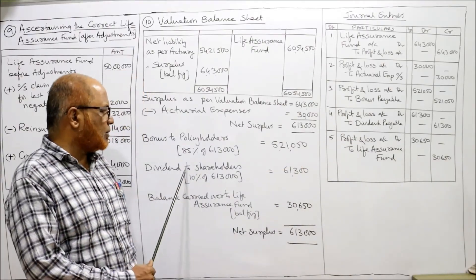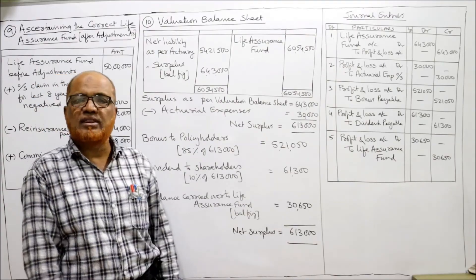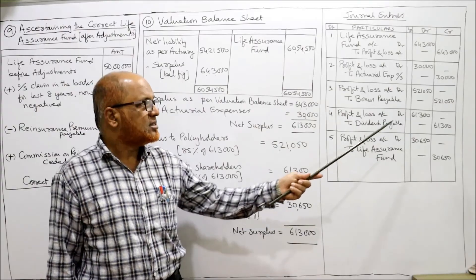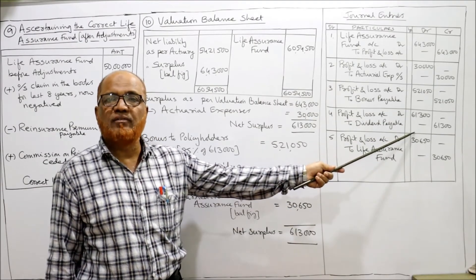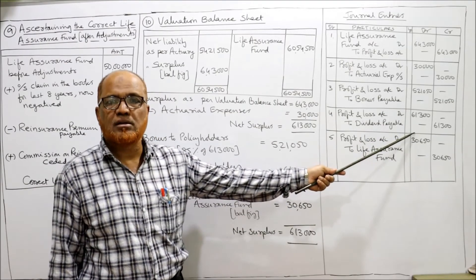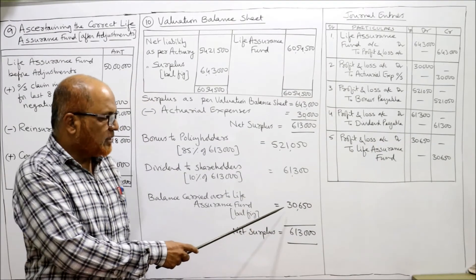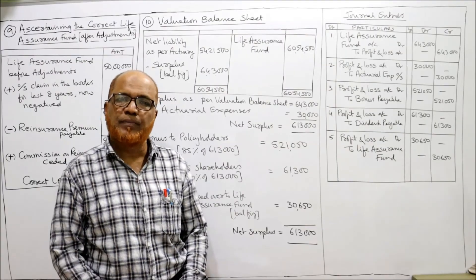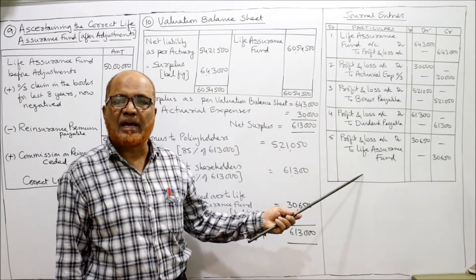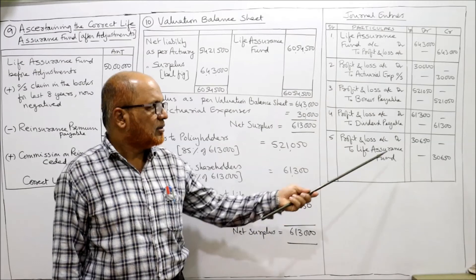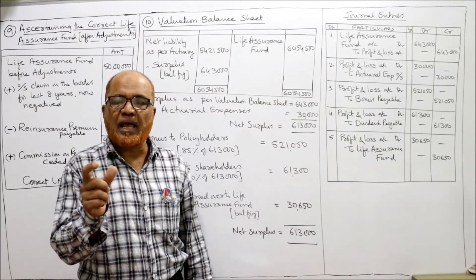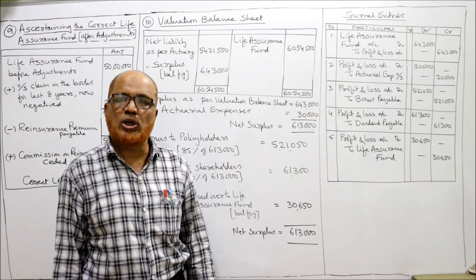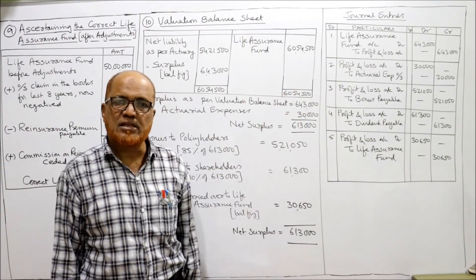Profit and Loss A/c Dr. to Dividend Payable ₹61,300 — being the dividend payable to shareholders. The remaining balance of ₹30,650 is transferred back: Profit and Loss A/c Dr. to Life Assurance Fund ₹30,650 — being the balance remaining in the Profit and Loss account transferred to life assurance fund.